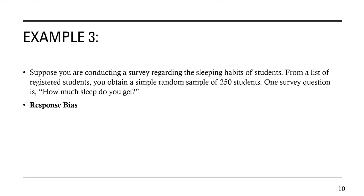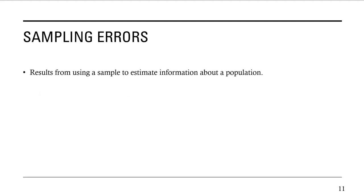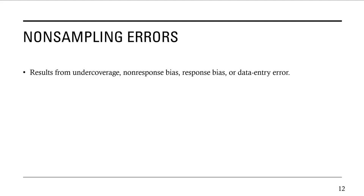The last two things to cover are sampling errors and non-sampling errors. Sampling errors are errors that occur because of how you chose your sample — they result from using a sample to estimate information about a population. Non-sampling errors result from under coverage, non-response bias, response bias, or data entry error. So the three types of bias we focused on in this video are sampling bias, response bias, and non-response bias. If you have any questions, don't hesitate to reach out, and I will see you all in the next video.